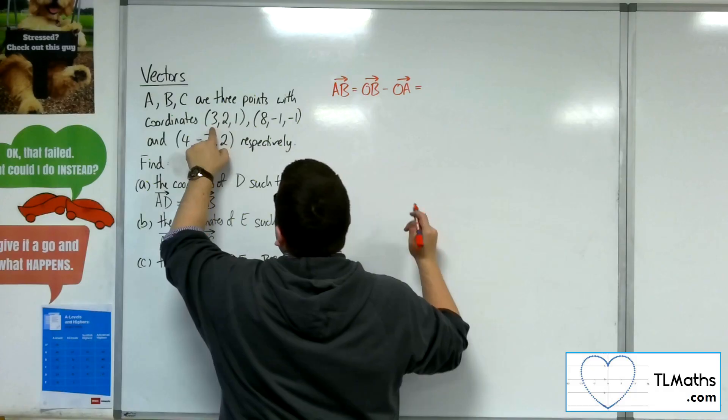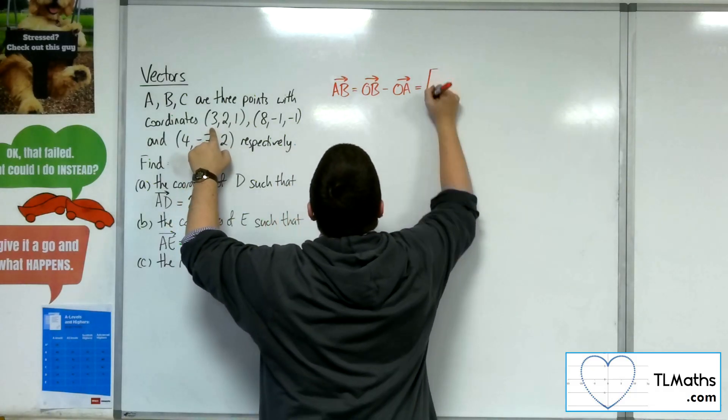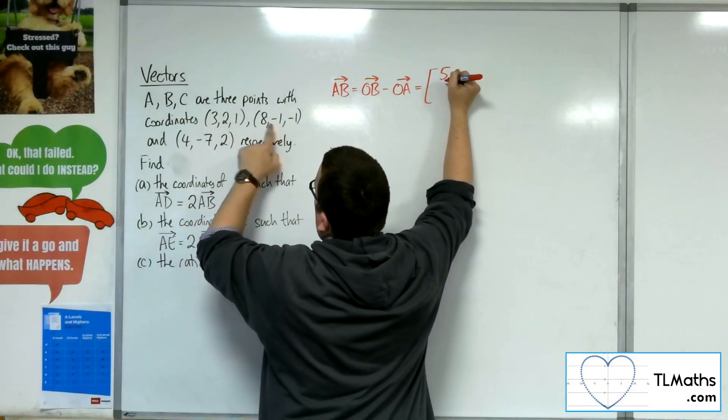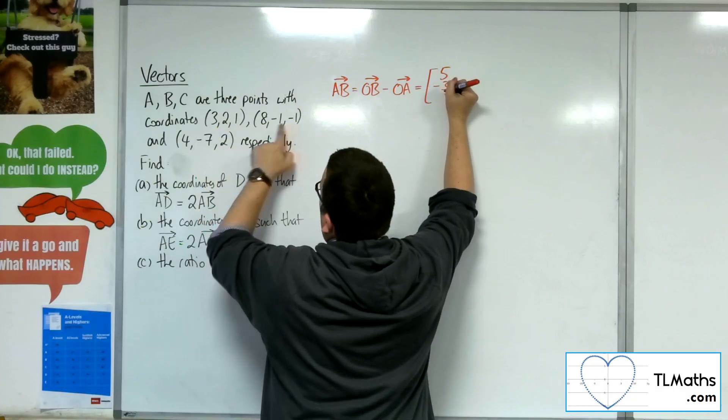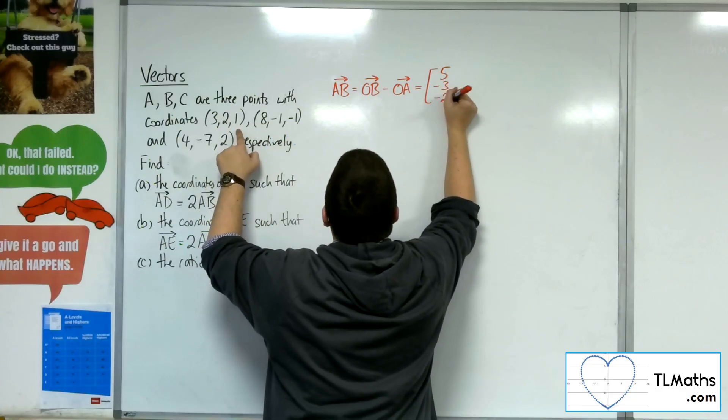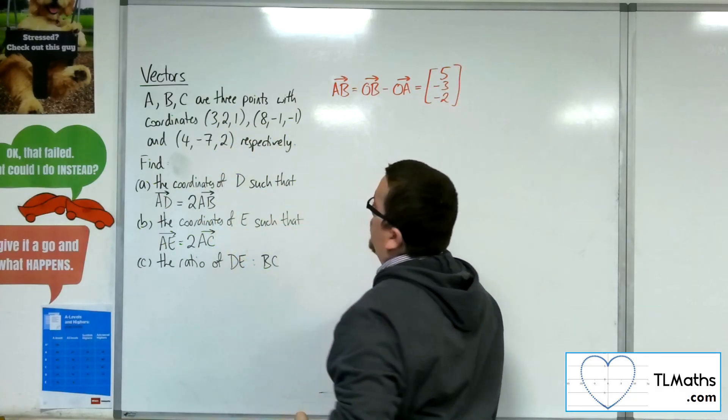So we're going to have 8 take away 3, so that would be 5. Minus 1 take away 2, so minus 3. Minus 1 take away 1 is minus 2. So that's the vector AB.